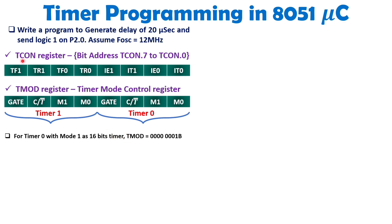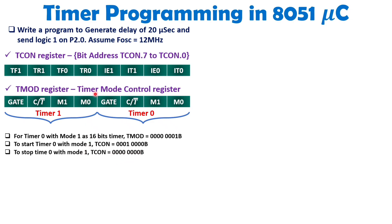Now I need to configure TCON. With Timer 0, I need to make TR0 equal to 1. When I make it 1, the timer starts. To start Timer 0 in Mode 1, set this bit to 1 and keep others as 0 — I only care about this bit since I am using Timer 0. To stop the timer, I load all zeros into TCON. Now you understand how to start the timer, stop the timer, and configure the timer.